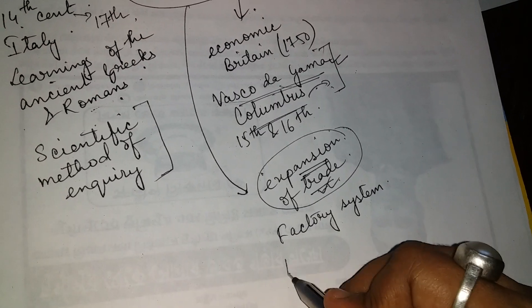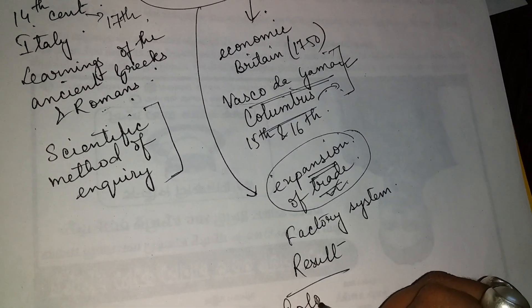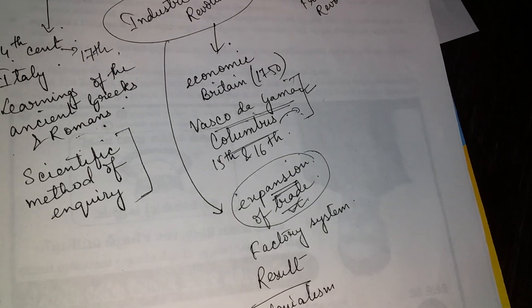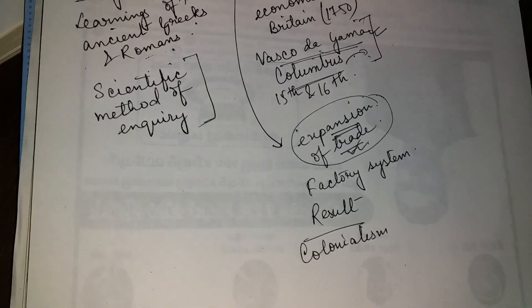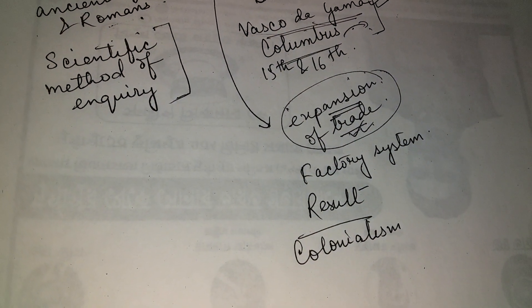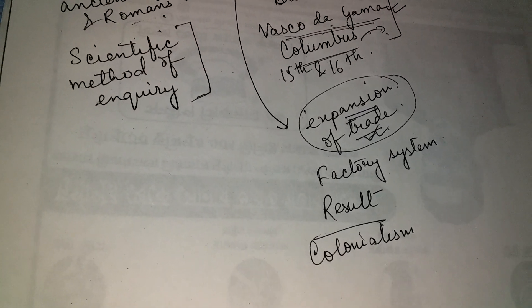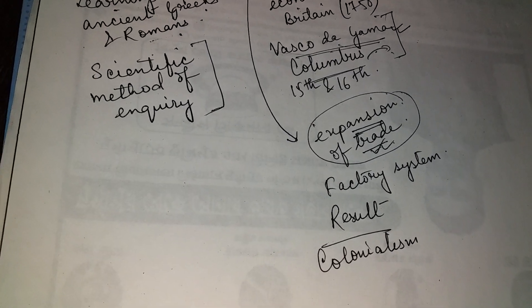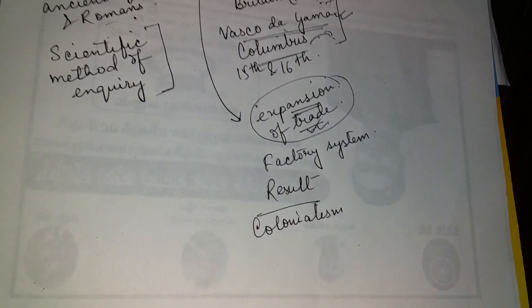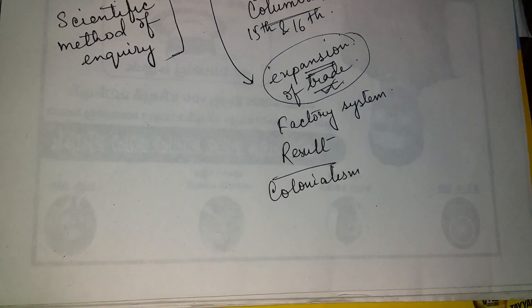The domestic system of artisans working at home with simple tools was replaced by the factory system. As a result of all this, colonialism occurred. Colonialism means when foreign or outside people come, settle, and acquire other countries, dominating and showing power over them. This happened as a direct result of the Industrial Revolution.